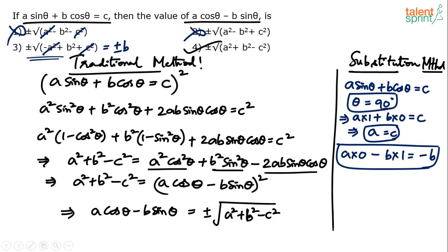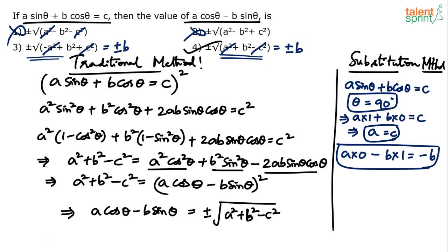But you can't mark option 3 as the answer yet — you must verify the other options too. Options 3 and 4 are both possible with θ = 90°. We are in a dilemma. What we know is options 1 and 2 are eliminated. Now substitute another value: θ = 0°, since no condition is given on θ. One more option will get eliminated.